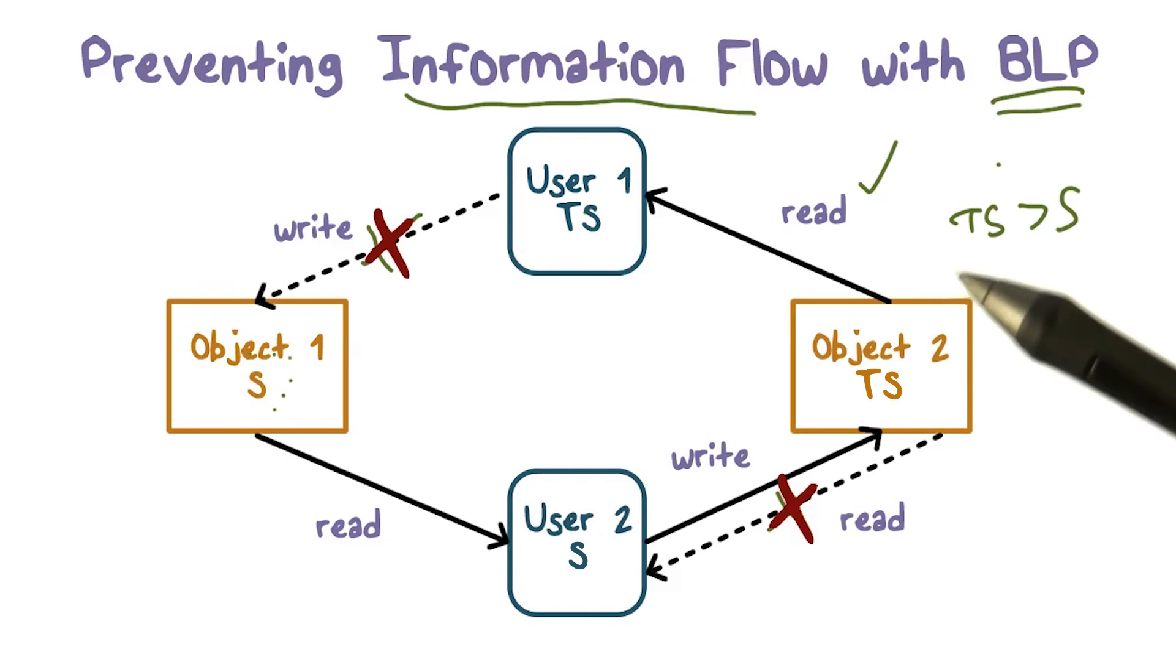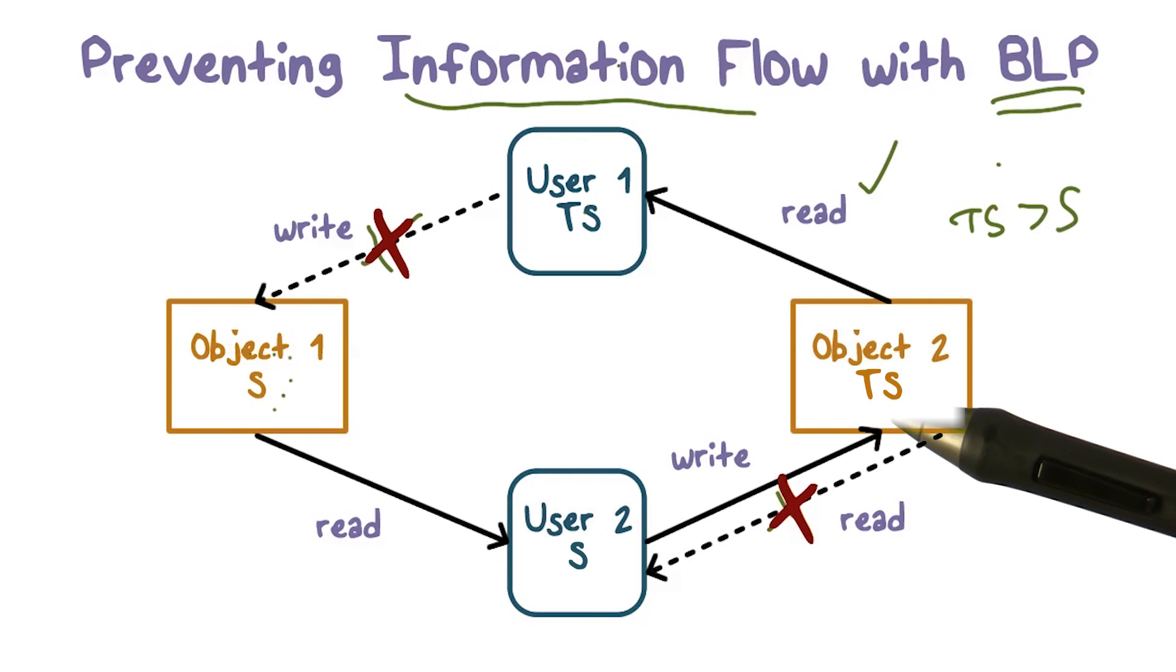So this is how we're able to control information flow and that's how we fix one of the shortcomings that we had with discretionary access control.